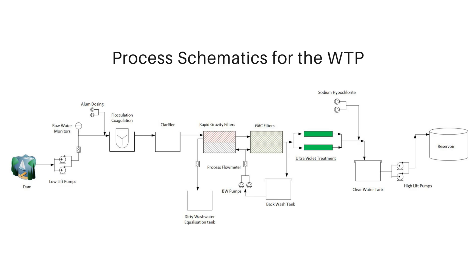From the dam we need low lift pumps, or raw water pumps, that will pump the water from the dam to the first process unit. As we will see when we look at the hydraulic profile, all these units should be arranged so that we pump water from the source to the first stage, then from the second stage onwards the water flows by gravity. The water is pumped from the low lift pumps to the flocculation tanks.